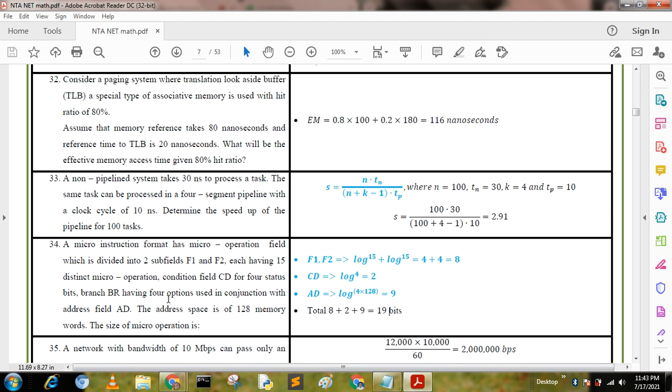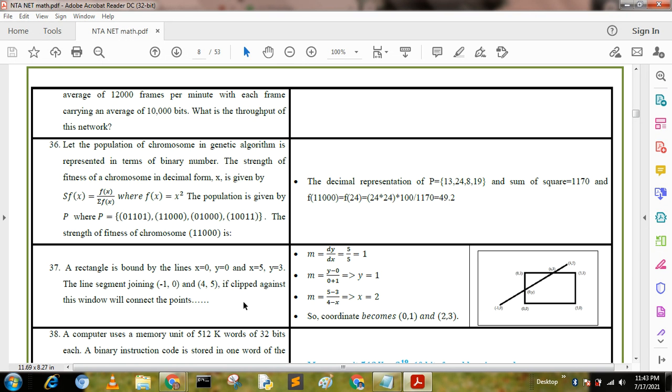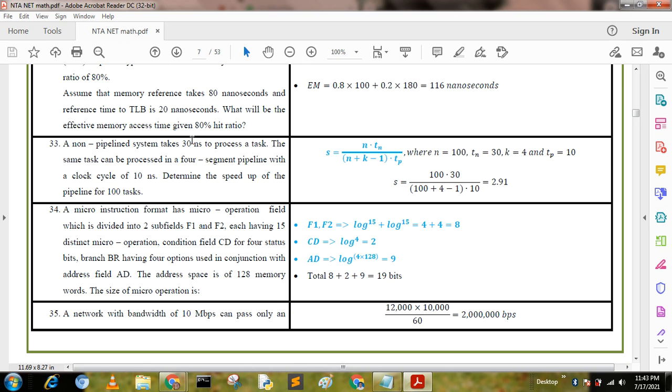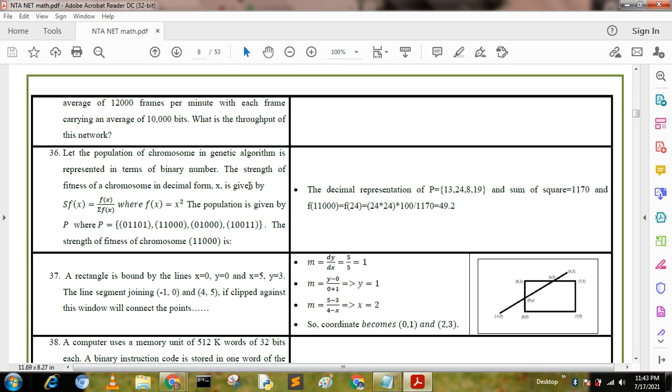Next question: A network with bandwidth of 10 Mbps can pass only an average of 12,000 frames per minute, with each frame carrying an average of 10,000 bits. What is the throughput of this network? The calculation is: (12,000 × 10,000) / 60 = 2 million bps. To know more answers for UGC NET questions, if you like this video, follow my channel.